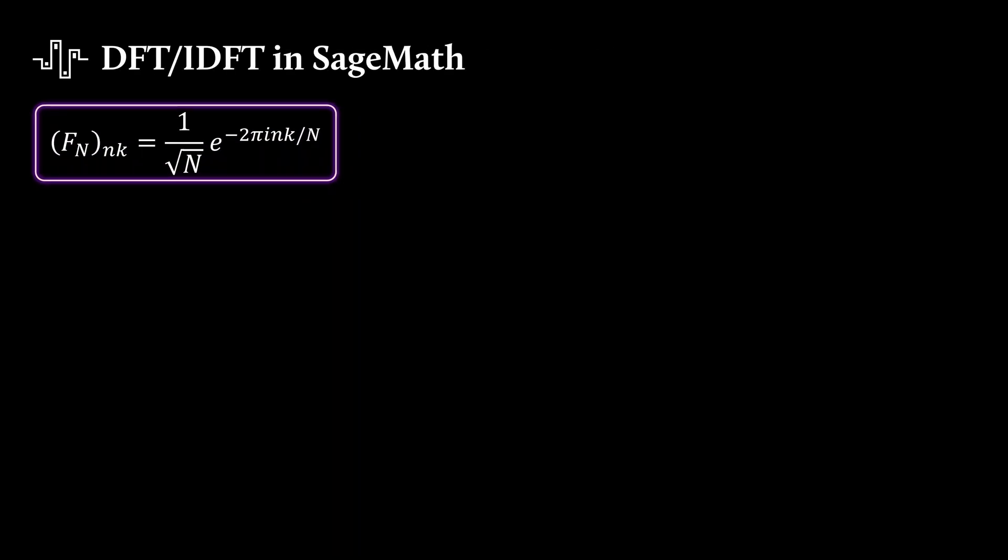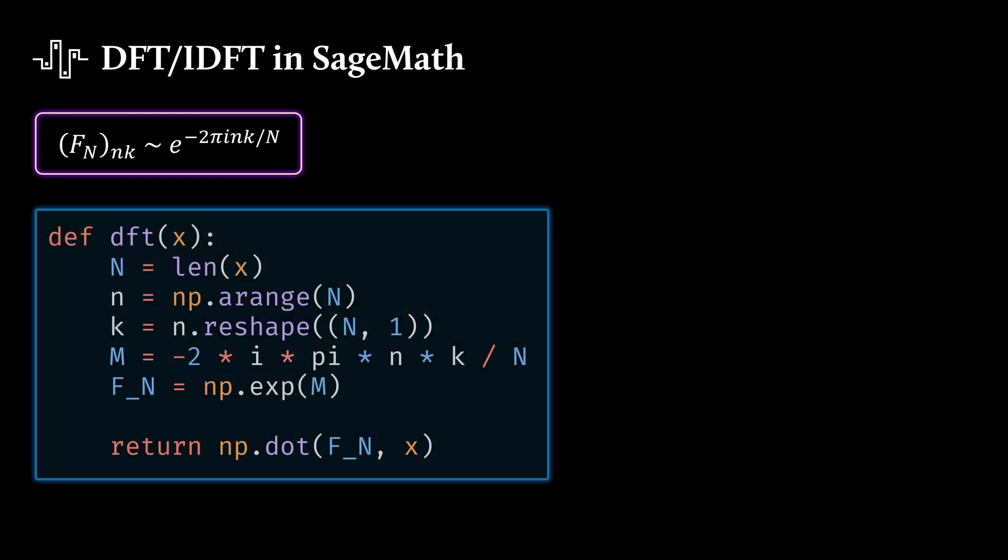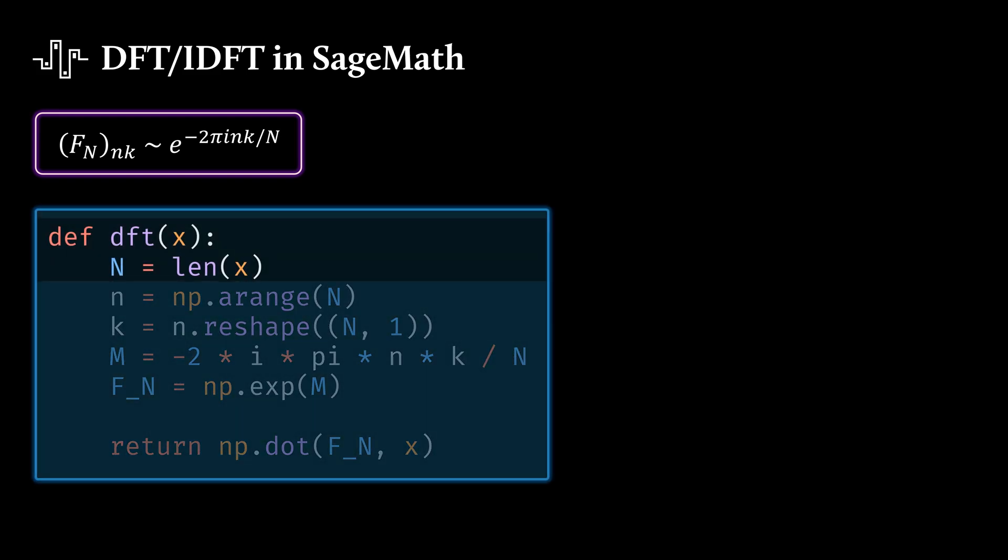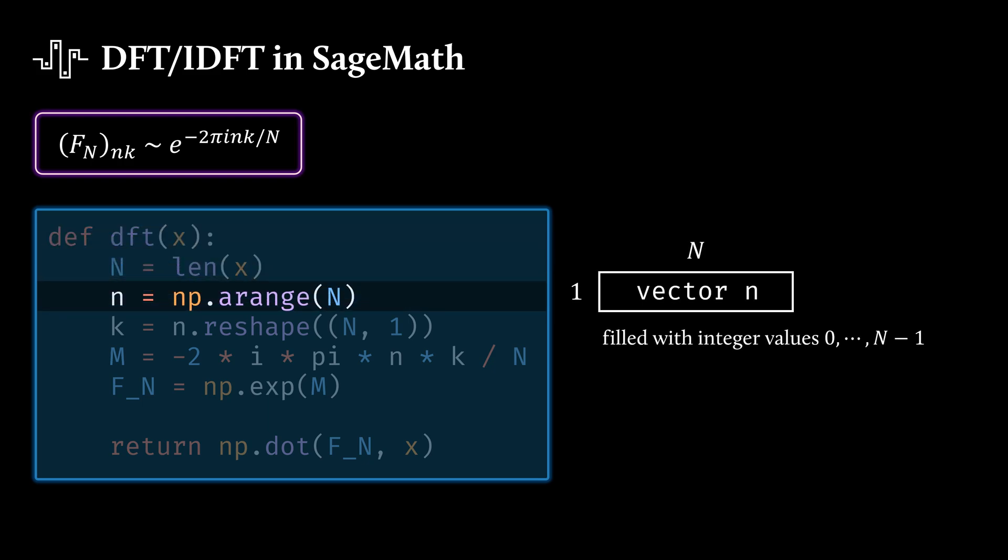Okay, now back to our implementation. We can implement that in SageMath using NumPy. We define a function DFT, and we pass in our signal as vector x. Big n is then given by the length of that vector. And the small n will iterate between integer values 0 up to big n minus 1. So for that, let's define a vector that has these integer values in it, like 0, 1, 2 up to n minus 1. And then k is basically the same. We just reshape it so that it's transposed.